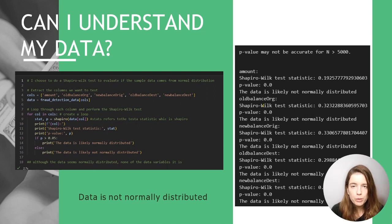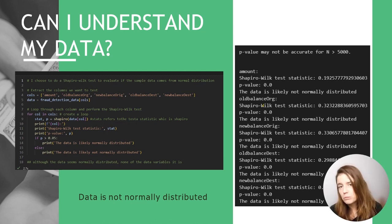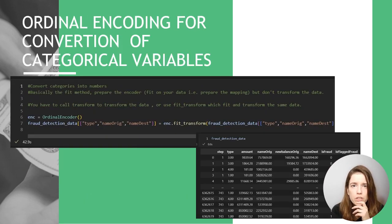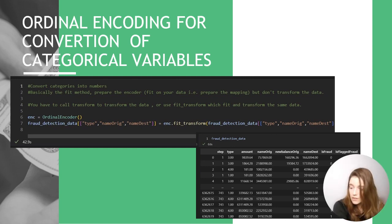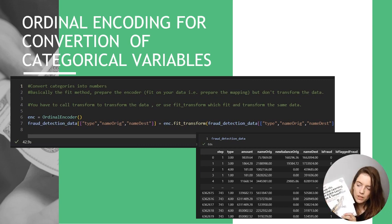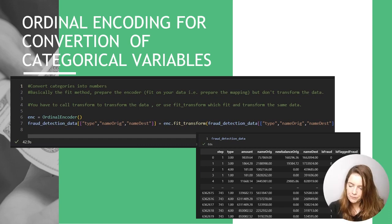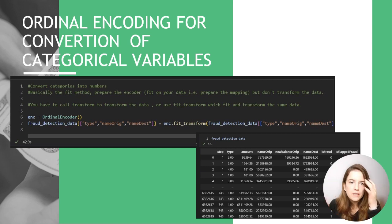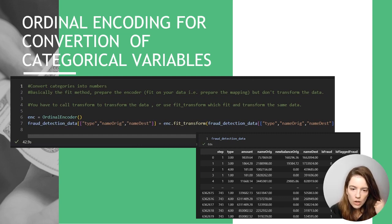I wanted to understand my data a little better, so I did some Shapiro-Wilk tests to evaluate whether the data had normal or non-normal distribution. The results showed that almost none of the variables were likely to be normally distributed. I was trying to follow a book I have here. This book really helped me because I followed their checklist on how to do a project from scratch — though it's still quite complicated. I learned that I could do ordinal encoding for converting categorical variables to numerical variables, so I did that for a few variables.